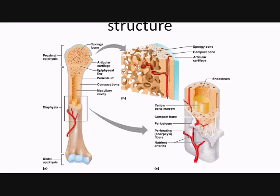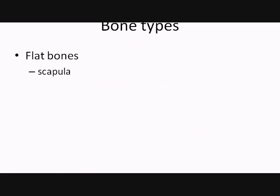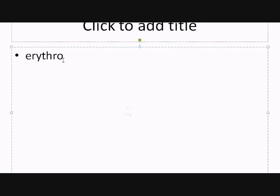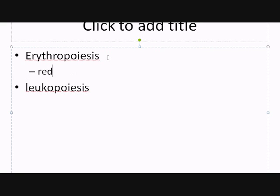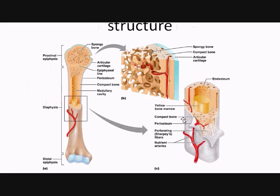The red bone marrow is also responsible for the formation of white blood cells as well — so it's not just red blood cells. We have the production of red blood cells and also white blood cells. As we mentioned before, the periosteum — this is a dense white fibrous tissue that essentially covers the compact bone. It contains numerous blood vessels and nerves, so obviously if you cut through this you will feel it.